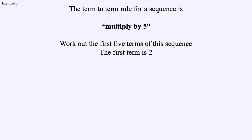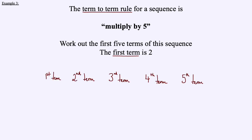Have a go at this one — the term-to-term rule is multiply by 5 and the first term is 2. Also, extension question: what kind of sequence would have a term-to-term rule of multiply by 5? The first term is 2, so 2 times 5 is 10, 10 times 5 is 50, 50 times 5 is 250, and 250 times 5 is 1,250. This would be a geometric sequence, because we're multiplying.